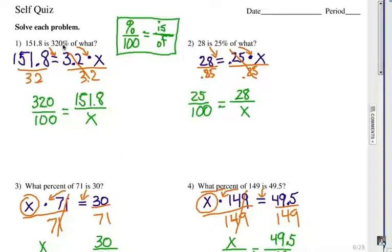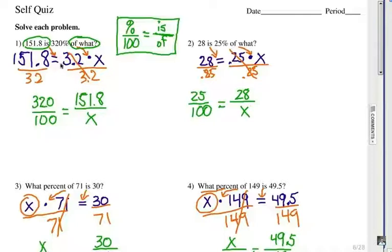Number 1: they mention 320%, so it's 320 over 100. On the other side, the 'is' number is 151.8 — notice how it's close to the word 'is' — and the 'of' is unknown, so it's 151.8 over x. Now we cross multiply, which gives us the same equation you would see in the equation method, and we solve to get the same answer. Number 2: you get 25 over 100 because it's 25%, and that equals 28 over x. The 'of' is unknown so x goes on the bottom — 'is' over 'of'.